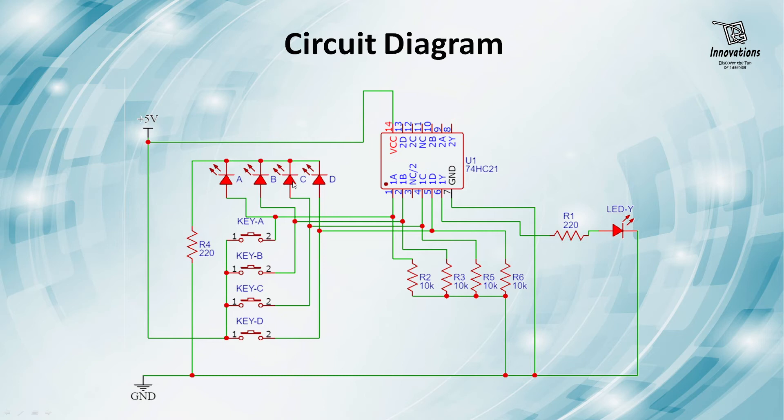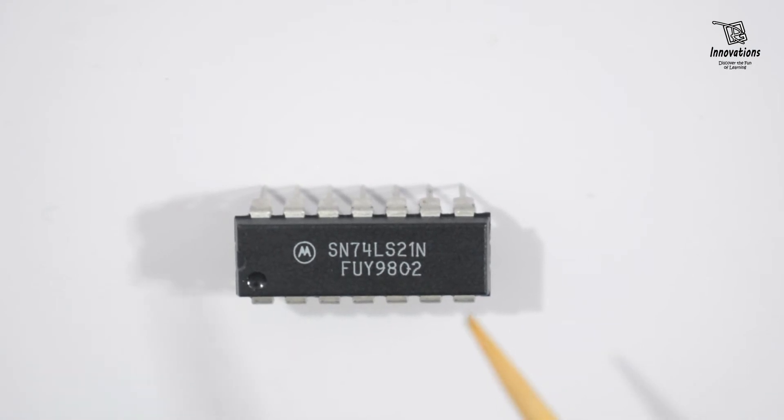This is the circuit. Now we'll move to the practical demo of IC 74LS21. Here is the 7421 IC and we'll check its 4-input AND gate function. As we've seen, it has two 4-input AND gates. We'll only check one segment. You can see the notch on the left side, and we start counting pins from the left of the notch: pin 1 to 7, then pin 8 to 14.